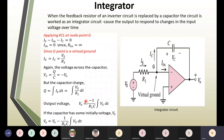This expression holds good when you have fully discharged the capacitor before applying the input. But if there is some initial charge already stored in the capacitor, the expression changes: V₀ = Vx − (1/R₁C) × ∫Vs dt, where Vx is that initial charge. We are going to do a problem where the initial charge will be given. Whenever the capacitor has some initial charge, the expression changes in this way. This is the final expression for the integrator.